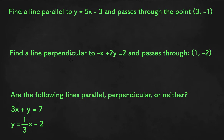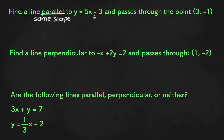So here we have three problems, and the first one says: find a line parallel to y equals 5x minus 3 and passes through the point. We're asked to find a line that is parallel to a given equation. Parallel means that the line will have the same slope. The slope of this equation is 5 since it is in slope-intercept form, y equals mx plus b.